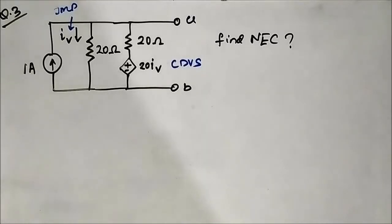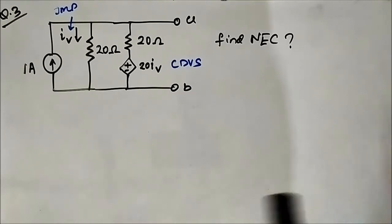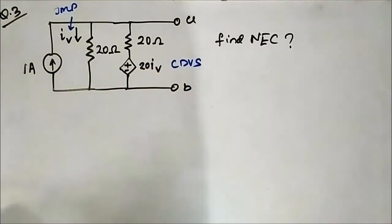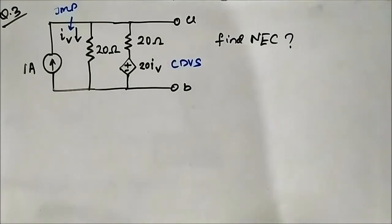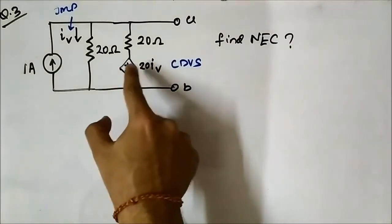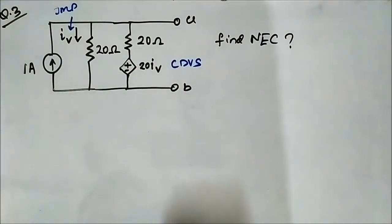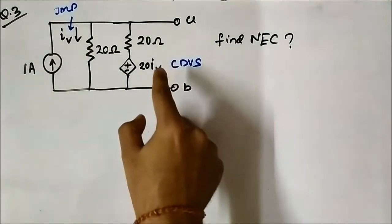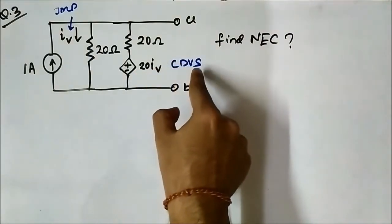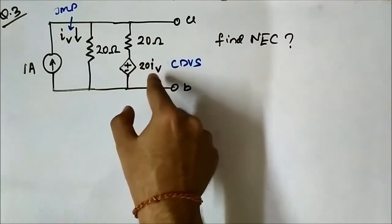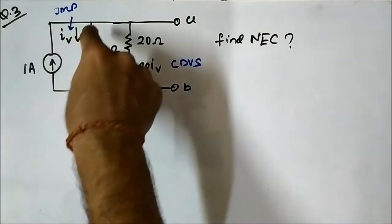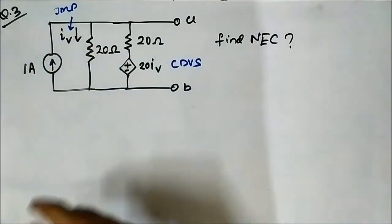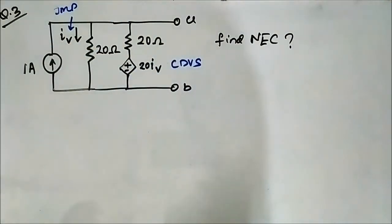Hello friends. This is the third question related to Norton equivalent circuit involving dependent sources. Here in this circuit we have to determine the Norton equivalent across the terminals A and B. We have a dependent source which is a current dependent voltage source — a voltage source dependent on the current IV flowing through the 20 ohm resistor. This is the important variable here.